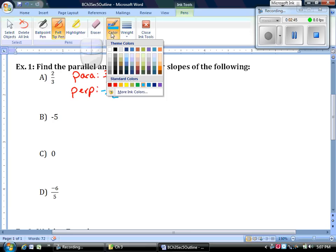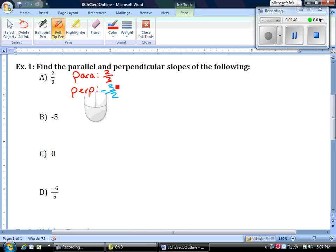Let's try negative five. The parallel slope is negative five. The perpendicular slope is going to be flipped. Remember, this is negative five over one, so it becomes one over positive five. I flip bottom to top and change positive to negative.